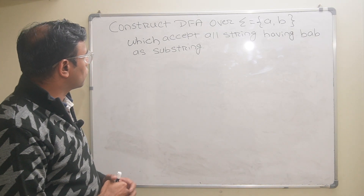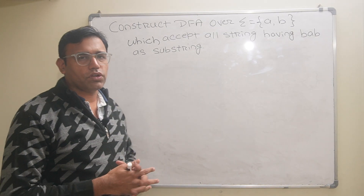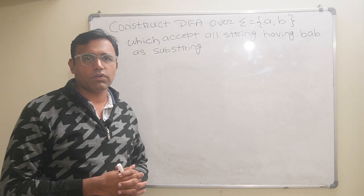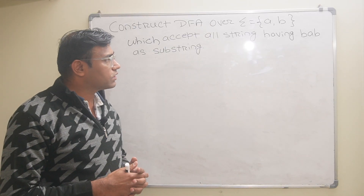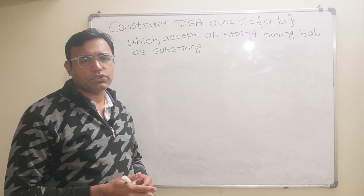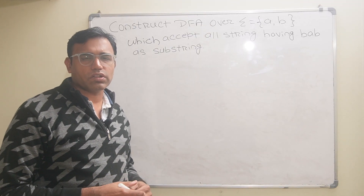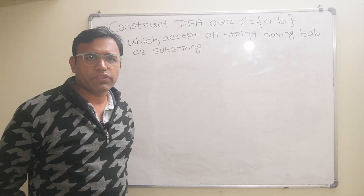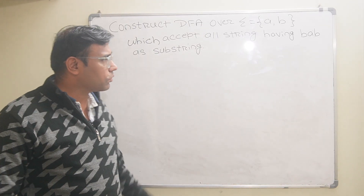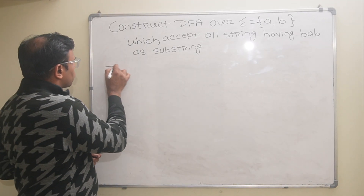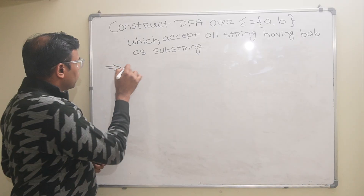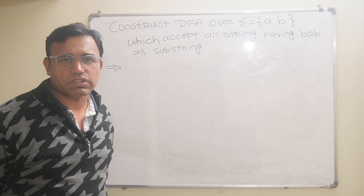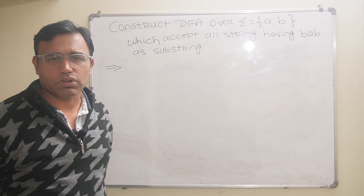Hello friends. The topic of this video is construction of a DFA over input symbols A and B, which will accept BAB as a substring — meaning we have to construct the DFA which will accept BAB as a substring over input symbols A and B. First of all, I will write the possible strings and then I will construct the DFA for the same.